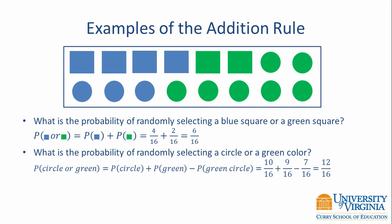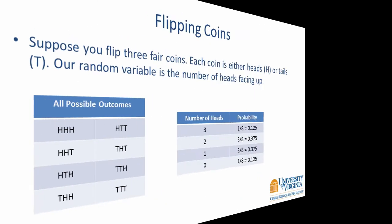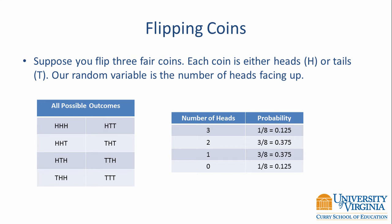Let's take what we know about computing probabilities and using the addition rule and apply it to a new problem. Suppose you flip three fair coins and each coin is either heads or tails. Our random variable of interest is the number of heads facing up. The table on the left shows all possible outcomes — for example, we could have three heads, two heads and a tail, heads-tails-heads, and so on. Each of these possible outcomes has a probability of 1/8th.